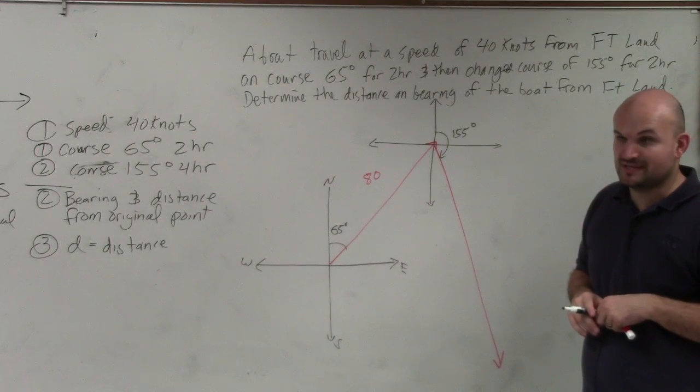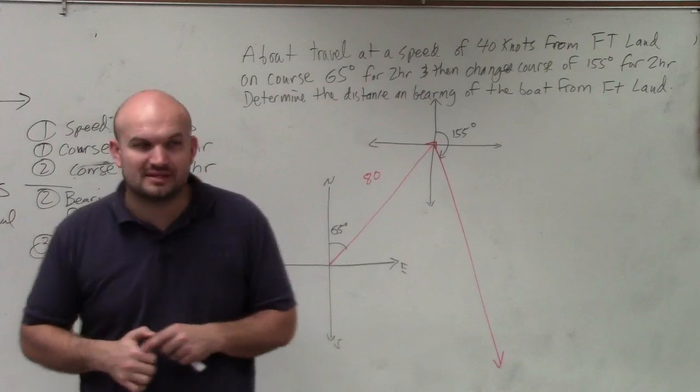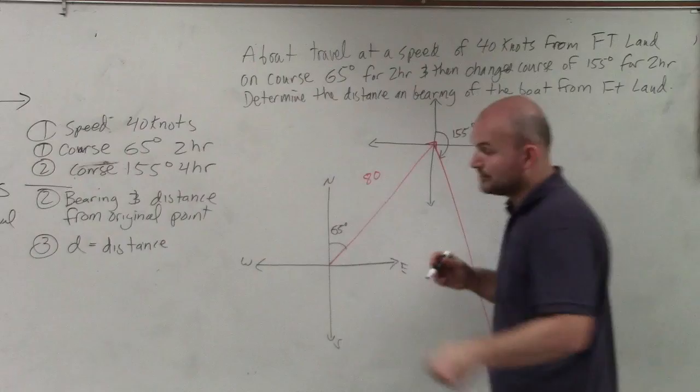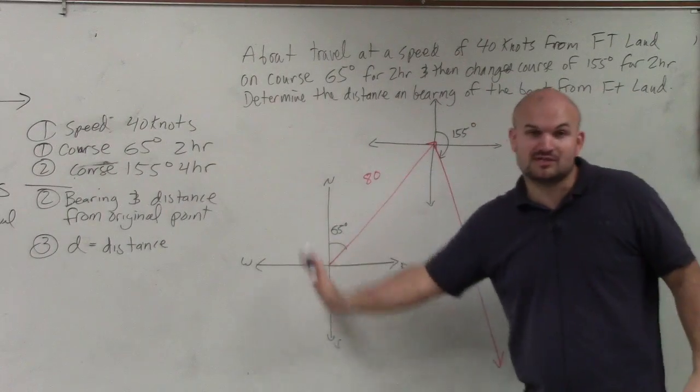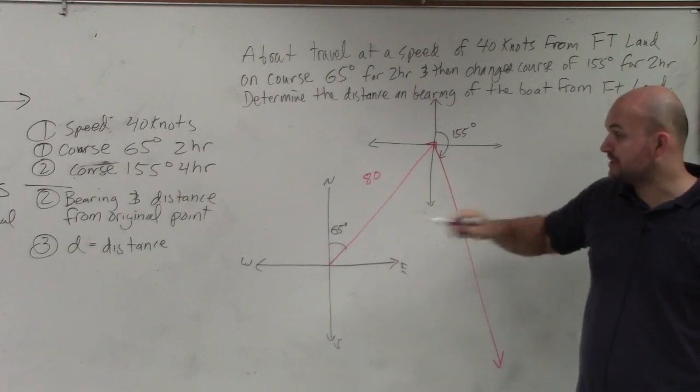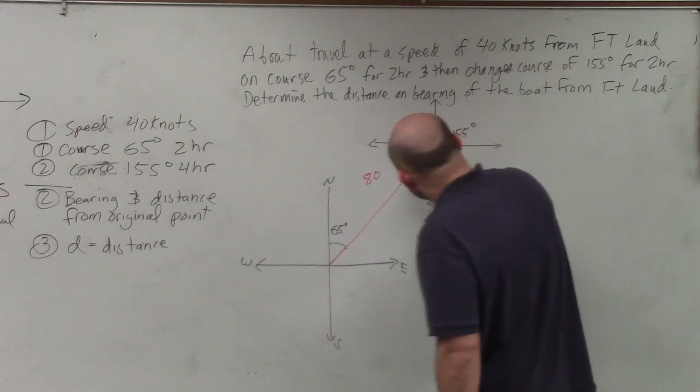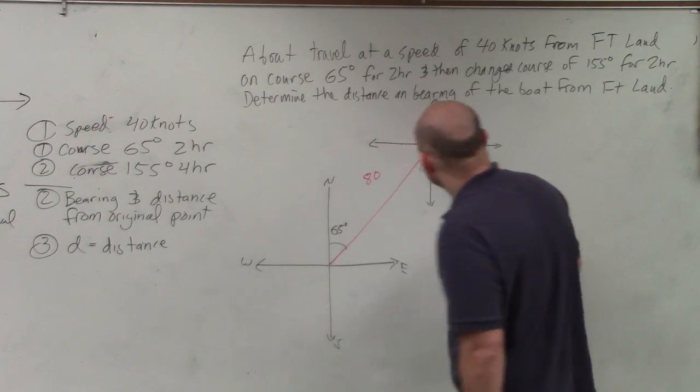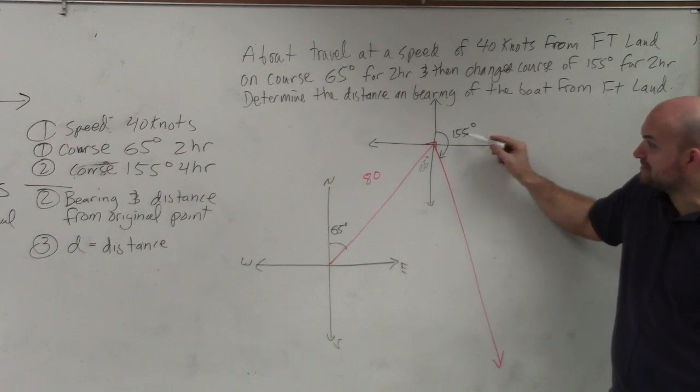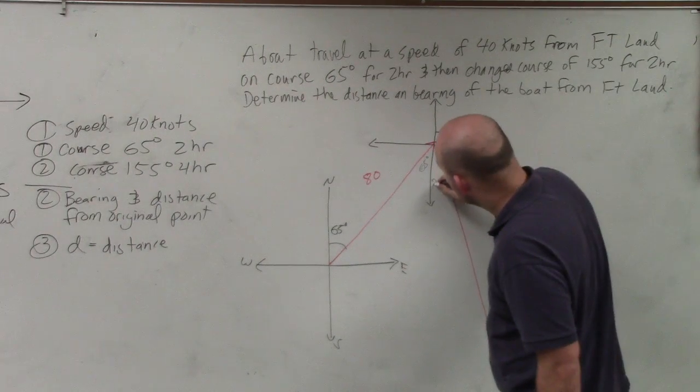So now, let's do a couple things. Now we need to kind of, this is where it kind of gets a little bit, this is where you guys have to use some kind of intuition. If you guys remember, these two lines, these north-south lines, are parallel, correct? From geometry, if this is 65 degrees, then this has to be 65 degrees. If we know halfway around a circle is 180, if this is 155, what does this have to be? 25 degrees.